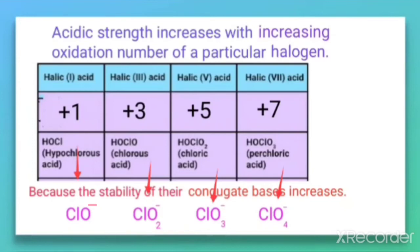When we look at the stability of these conjugate bases, ClO₄⁻ is more stable than ClO₃⁻, which is more stable than ClO₂⁻, which is more stable than ClO⁻. This shows that the acidic character increases with the increase in oxidation number of a particular halogen, because the stability of the conjugate bases increases, giving rise to increasing acidic strength with increasing oxidation number.